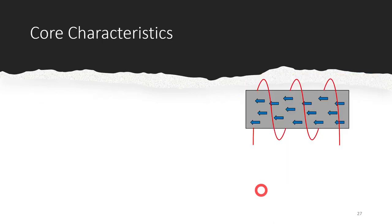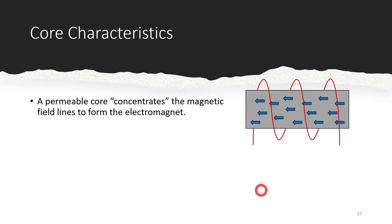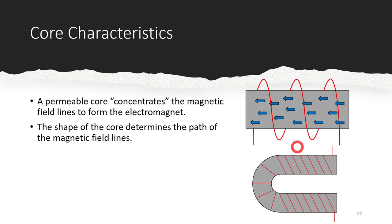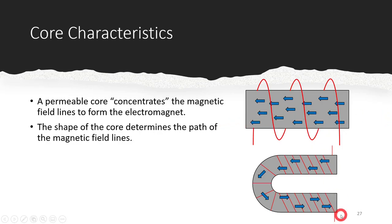The permeability core concentrates those magnetic field lines to form that electromagnet - all those domains are aligned when current is running through here. If we take the power source off, these domains would go back to random orientation. The shape of the core really determines the path. Everything shown so far has been straight, but there are round magnets - that's basically what a motor is - and U-shaped electromagnets in all different shapes and sizes. In a U-shape, the north and south pole are going to be facing each other on the same plane.